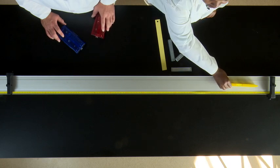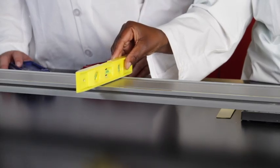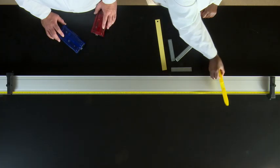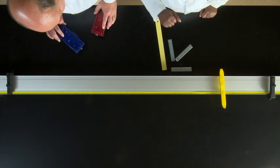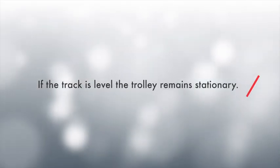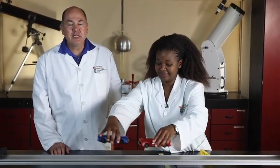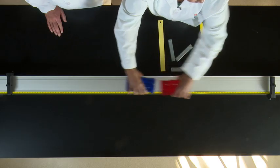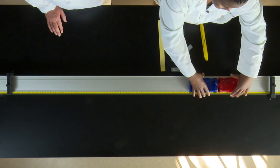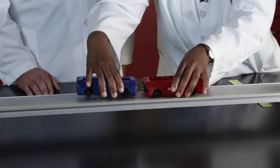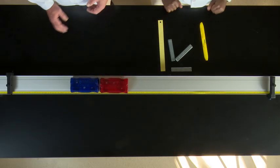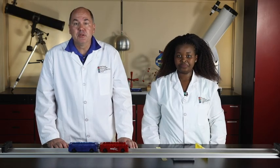Move the spirit level to various positions on the track to check and adjust the horizontal alignment. The real test comes now — even if you don't have a spirit level, this is the way you finally know that your track is level: if the track is level the trolley remains stationary no matter where it is positioned on the track. Now you are nearly ready to carry out the experiment. Pause while you read through pages 1 and 2 of the practical investigation.